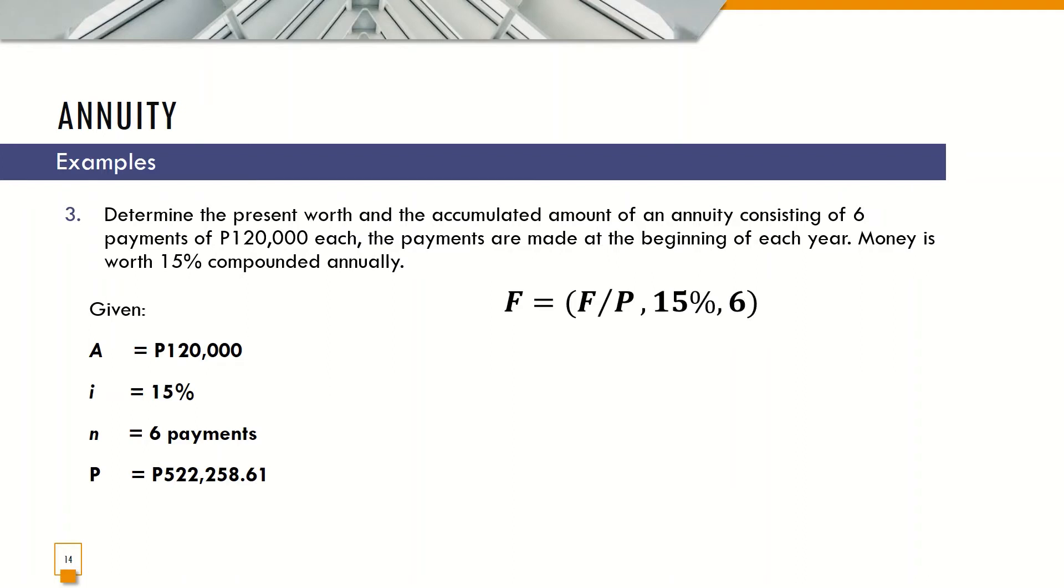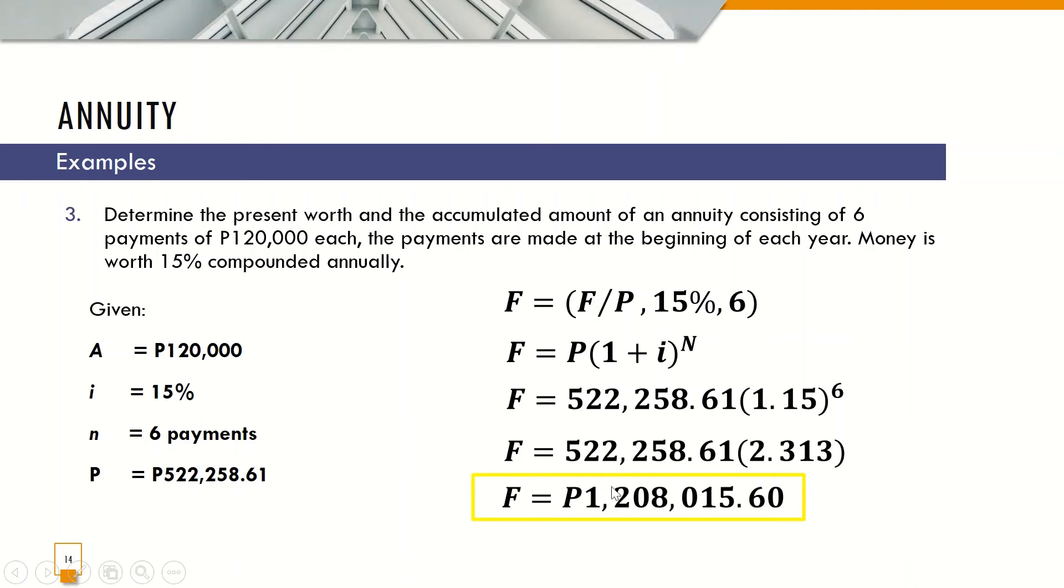And in finding for F, we are going to use the compound interest formula. P is 522,258.61 times 1.15 raised to the power of 6. The result for 1.15 raised to the power of 6 is 2.313, and F equals 1,208,015 pesos and 60 centavos.